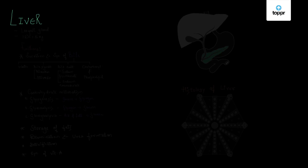Liver is the largest gland of the body. It is found towards the right side of the abdominal cavity and weighs somewhere around 1.2 to 1.5 kilograms.